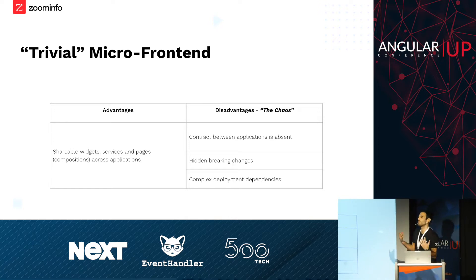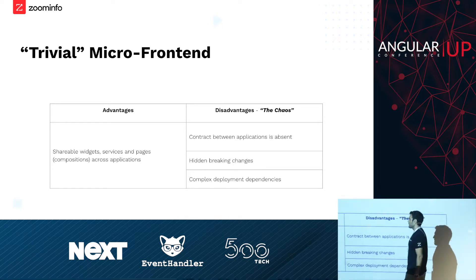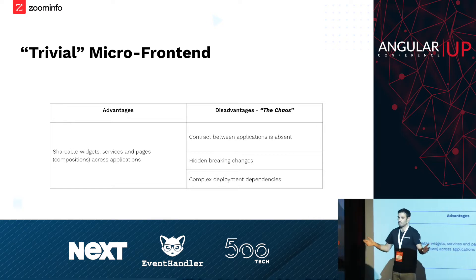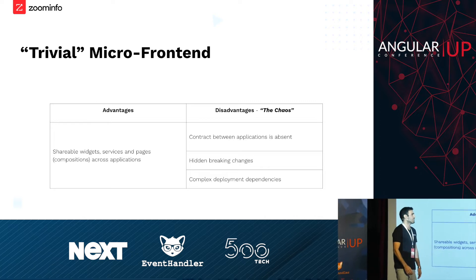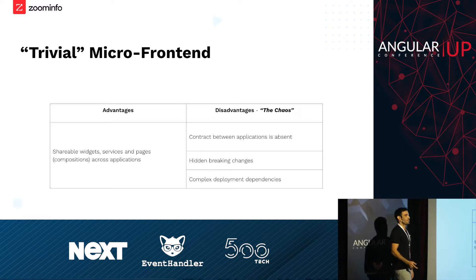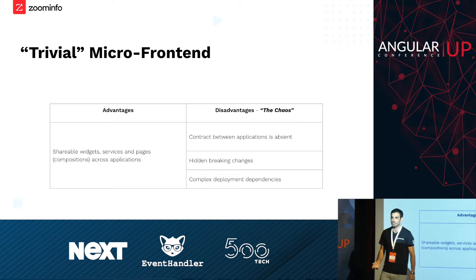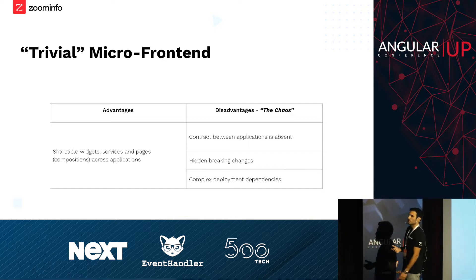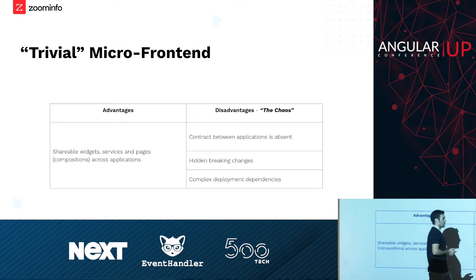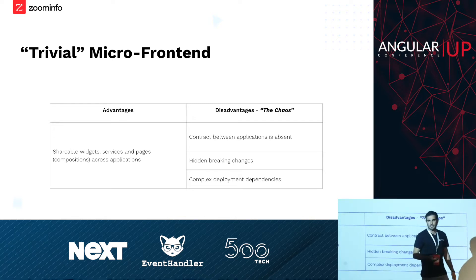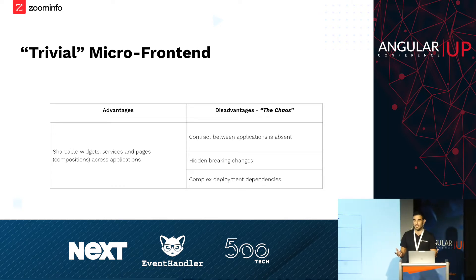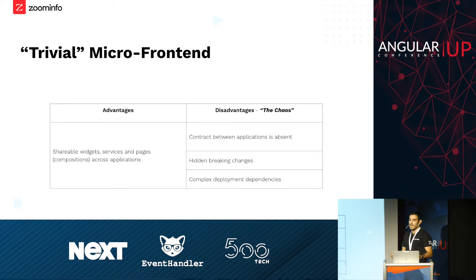So what are the advantages? Why do we need microfrontends? It allows us to expose shareable widgets, services, and pages — the composition applications we have. But if we work in the pure way, we'll get chaos because we don't have a contract between applications. We don't know what we're exposing, what people are consuming, or if we're going to apply any breaking changes. And also, how do I know who is consuming the user? My application is something that anyone can consume from a CDN. So I need to understand the dependency graph, and now it becomes more complex.